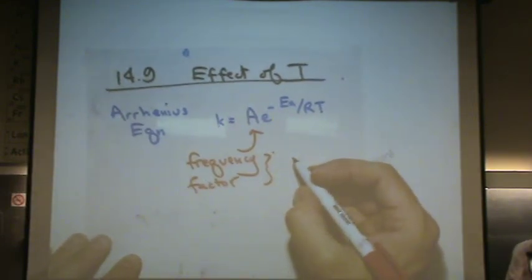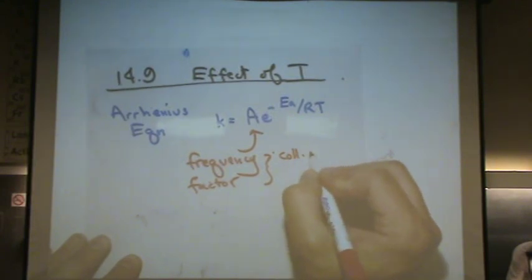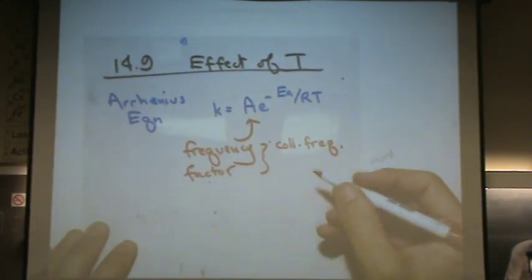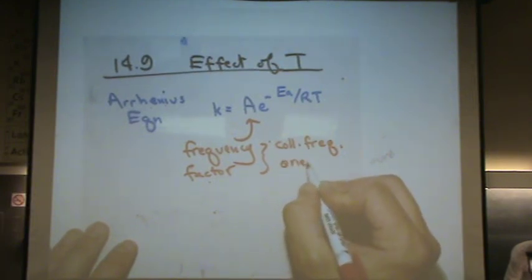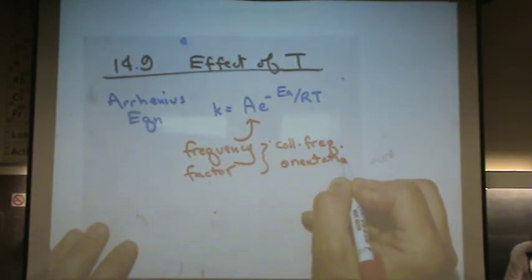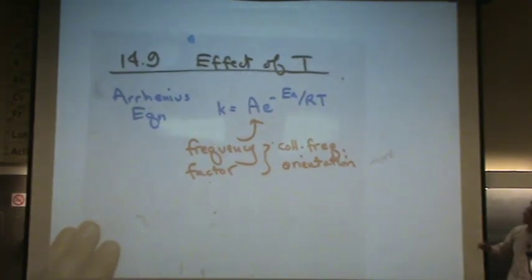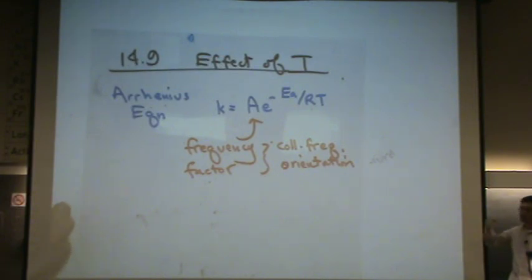Frequency factor is related to the collision frequency and orientation. So in this course, we'll give it to you. But if somebody had to calculate it, that constant is related to what the collision frequency is and how the orientations of the molecule are. That has to do with probability of favorable orientation.